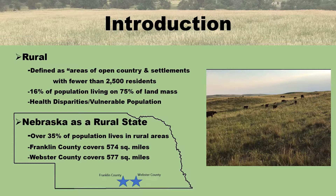According to the Census Bureau, Franklin County covers about 574 square miles and has a population average of 5.6 persons per square mile, and Webster County covers 577 square miles and has a population average of 6.6 persons per square mile.